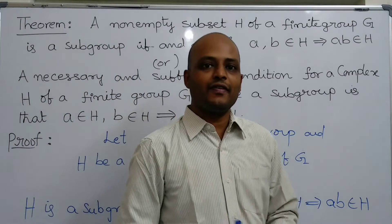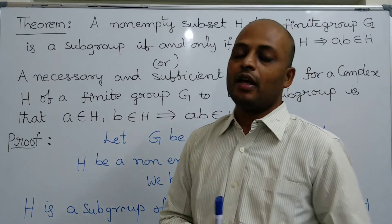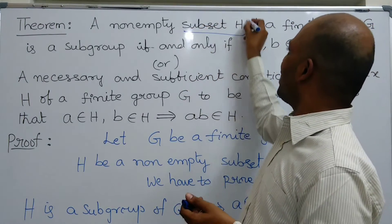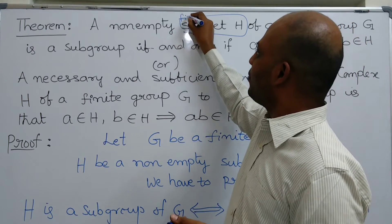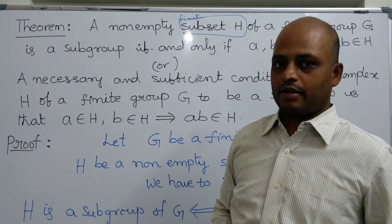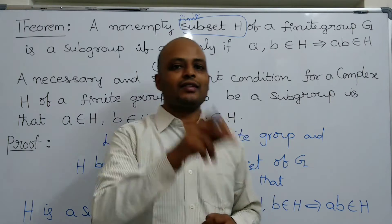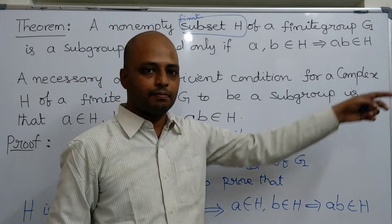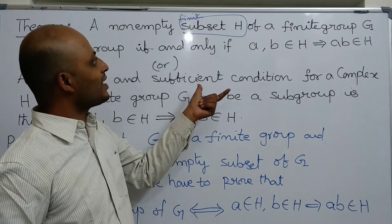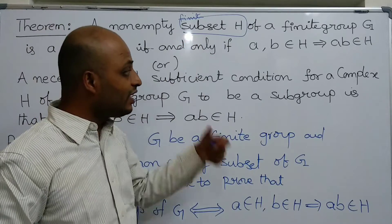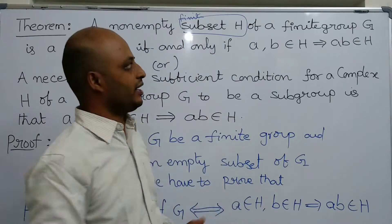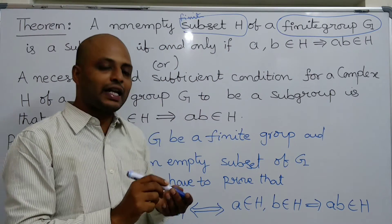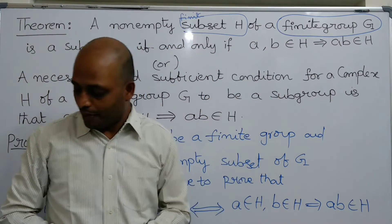Observe that in the previous class we also learned a similar theorem. In that theorem, the complex is finite — that subset H is finite — but we don't know about the group, whether it is finite or infinite. The condition is the same, but there H is finite, whereas here the group G is finite. That is a very important difference between this and the previous theorem.